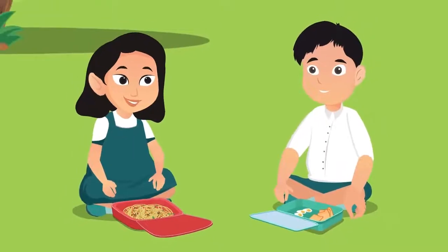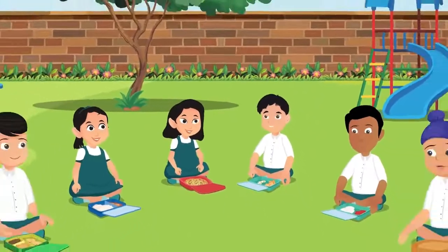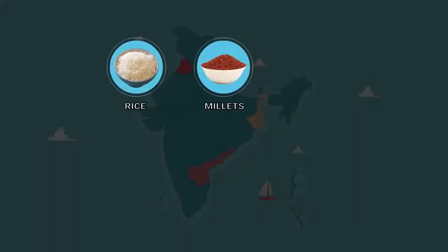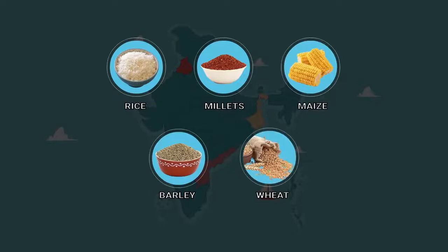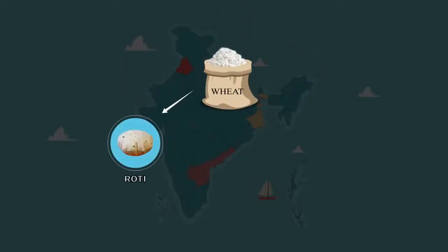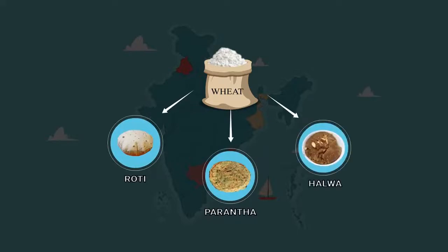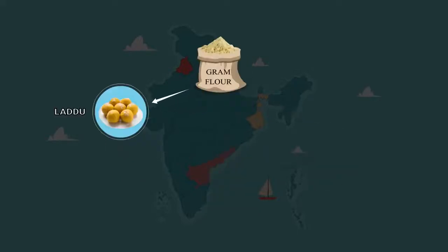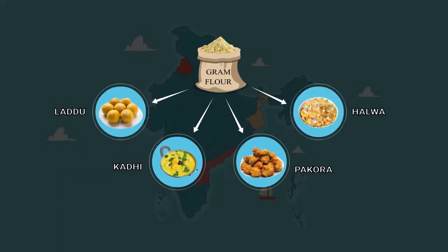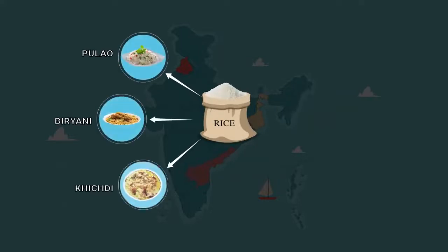The food we eat is cooked with many different kinds of ingredients, but there are a few things which are basic to the cuisine of India — for example, rice, millets, maize, barley, wheat, etc. Our food is largely made from these ingredients. The same ingredient can be used for making a variety of dishes. For example, wheat is used in making rotis, parathas, and halwa. Gram flour is the basic ingredient in laddoos, kadi pakodas, and halwa.